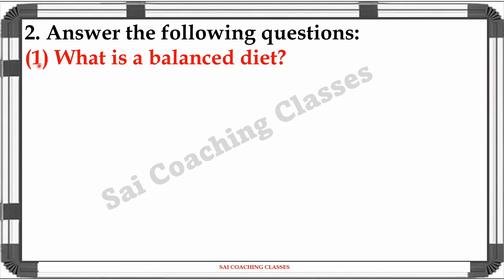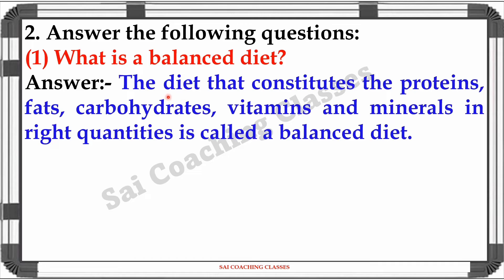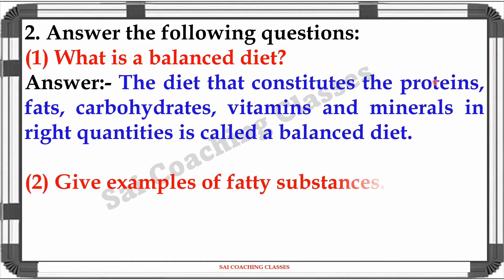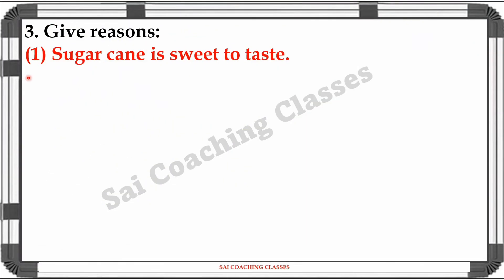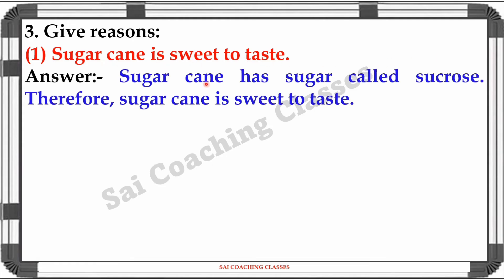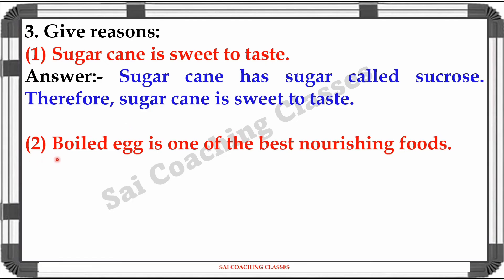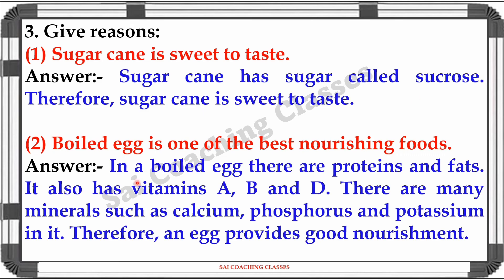Question number 2. Answer the following questions. 1. What is a balanced diet? Answer: The diet that constitutes proteins, fats, carbohydrates, vitamins, and minerals in right quantities is called a balanced diet. 2. Give examples of fatty substances. Answer: Cream, butter, ghee, oil, nuts, meat, and egg yolk are examples of fatty substances. 3. Give reasons. First: Why is sugar cane sweet to taste? Answer: Sugar cane has sugar called sucrose, therefore sugar cane is sweet to taste. 4. Why is boiled egg one of the best nourishing foods? Answer: In a boiled egg there are proteins and fats. It also has vitamins A, B, and D. There are many minerals such as calcium, phosphorus, and potassium in it. Therefore, an egg provides good nourishment.